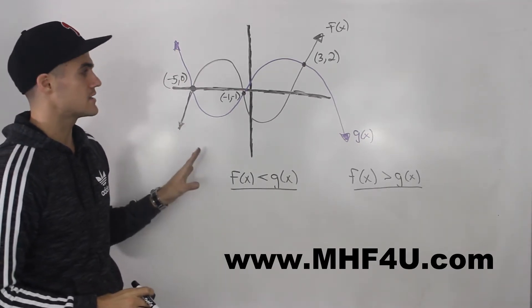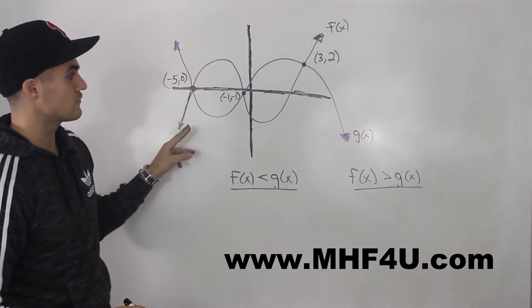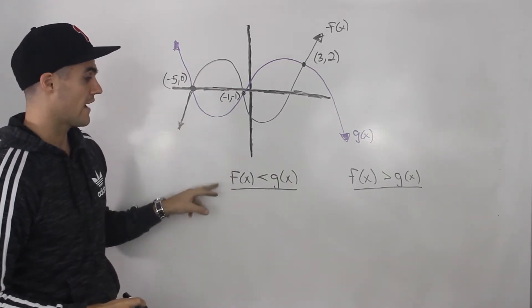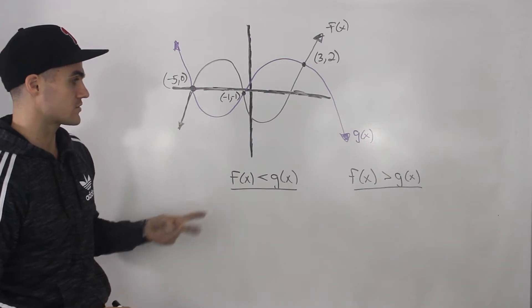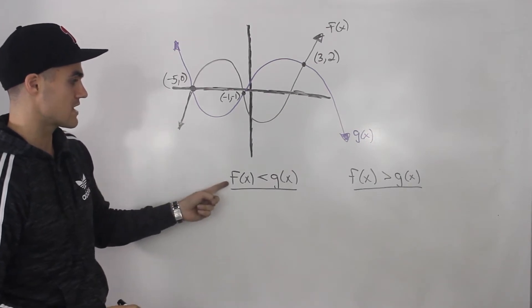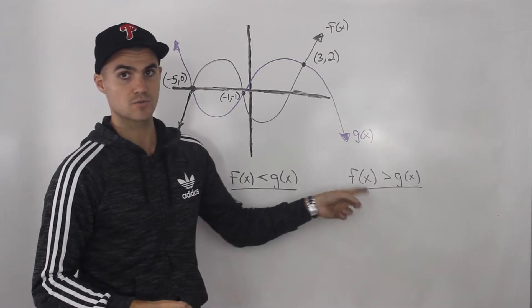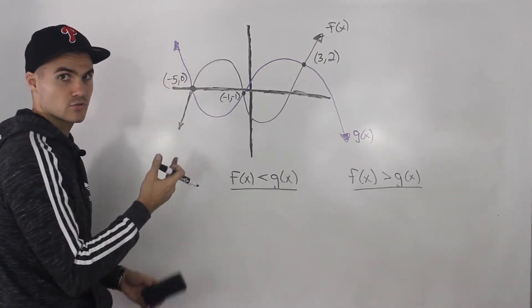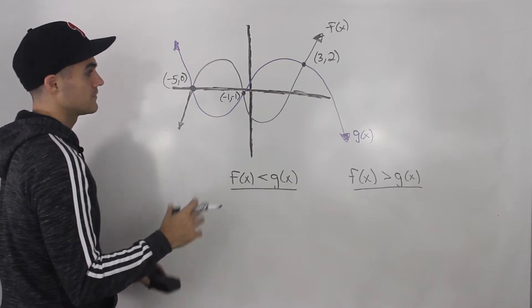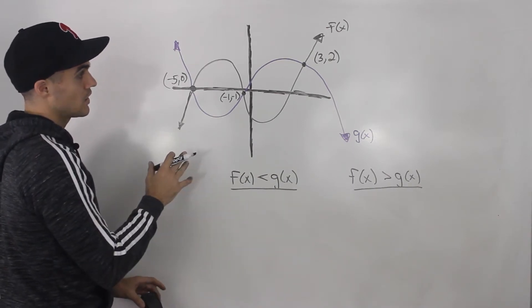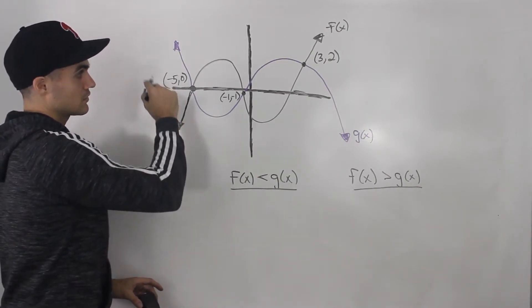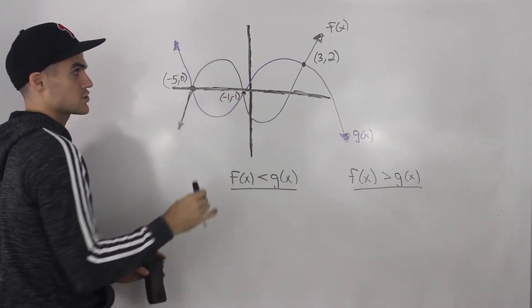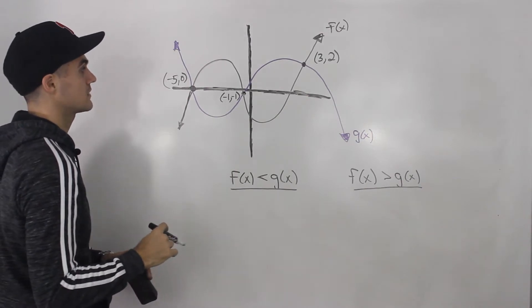A lot of times you'll get a question like this, where they'll give you a graph of two functions on the same graph, and then from the graph you have to figure out inequalities. So here we're going to figure out two of them: when is f of x less than g of x, and when is f of x greater than g of x? Usually we've been given equations so far and can algebraically solve it, but in this case we're just given the graphs of the functions, along with their points of intersection.